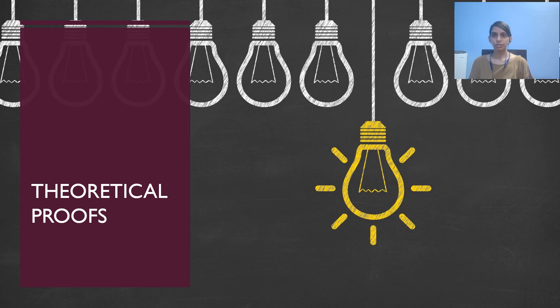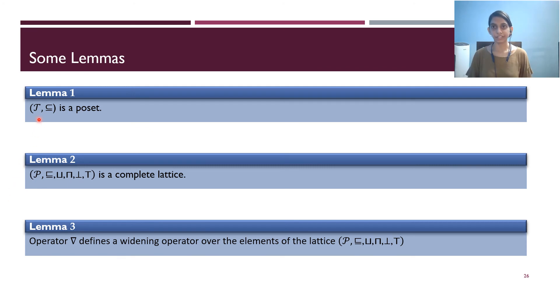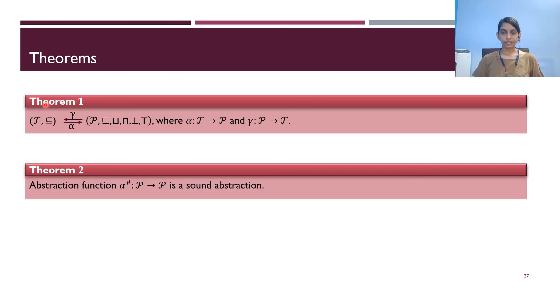After understanding the proposed PO domain and using it for the RA memory model, we can now go over some of the theoretical results established over this PO domain. The definitions and proof sketch of these can be found in the paper. We show that the set T where each element is set of MO forms a PO set under this ordering relation. Lemma 2 shows that the set of partial orders with this ordering relation, join, meet, bottom and top forms a complete lattice. We have defined a widening operator over the lattice P for faster convergence. In the interest of time, we have not discussed the details here. I encourage you to go through our paper for the details. Lemma 3 proves the correctness of this widening operator. We have proved that the abstraction function alpha and the concretization function gamma forms a Galois connection between Po set T and lattice P. We show that the upper approximation function alpha-sharp is sound over lattice P.